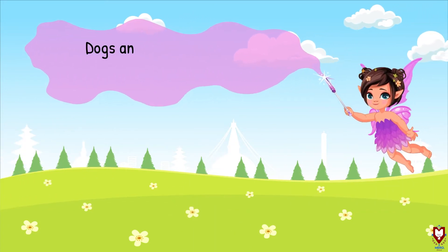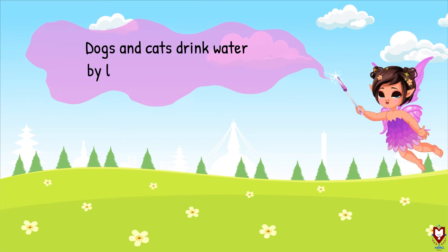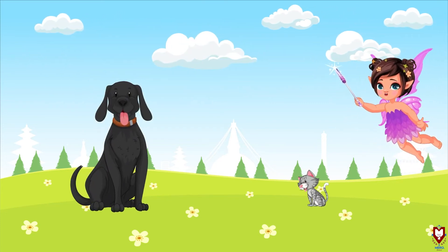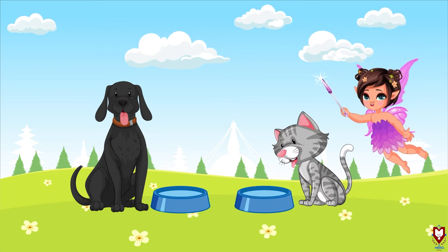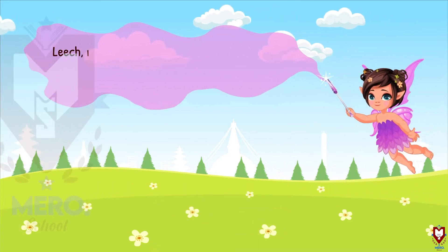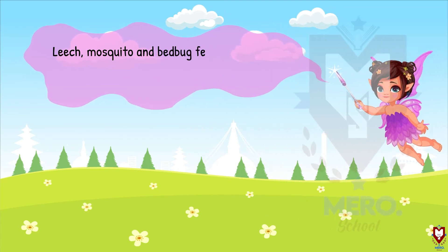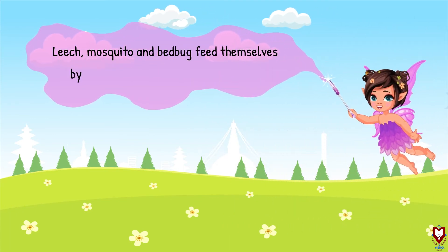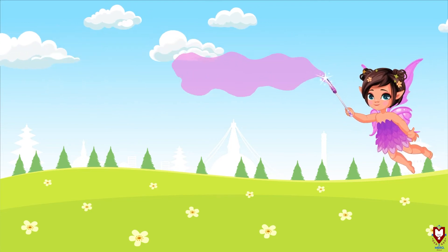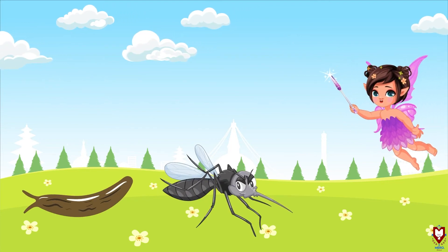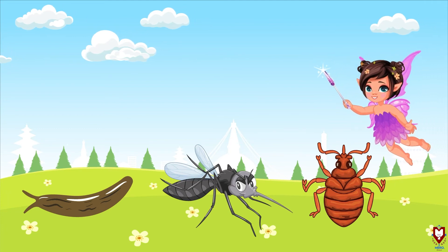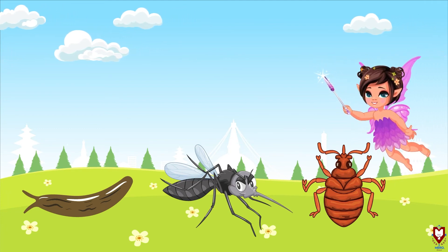Dogs and cats drink water by licking it with their tongue. Kukur rra biralo le paani jibro le chate ra khane garchan. Leech, mosquito, and bed bug feed themselves by sucking the blood of other animals. Juka, lamkutte rra upi aale chai aru janavar ko sarir baata ragat chuse ra khane garchan.